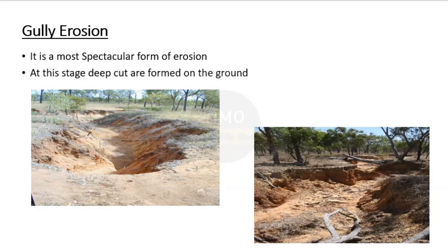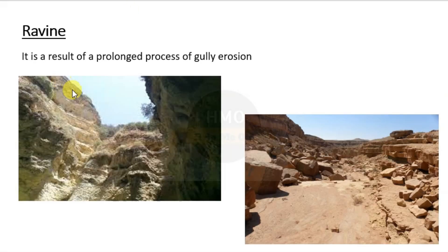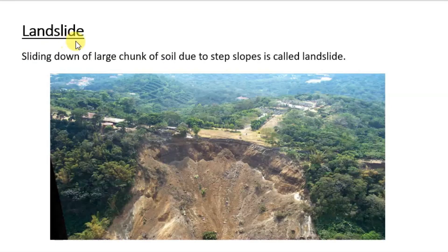The third stage is gully erosion — the most spectacular form of erosion — where deep cuts are formed on the ground, mainly due to high velocity water over a longer period of time. The fourth is ravine, a result of a long process of gully erosion where gullies are converted into ravines through continuous high-velocity water flow. Finally, landslides mainly occur in mountain or hill areas where large chunks of soil slide down due to steep slopes, leading to severe soil erosion.